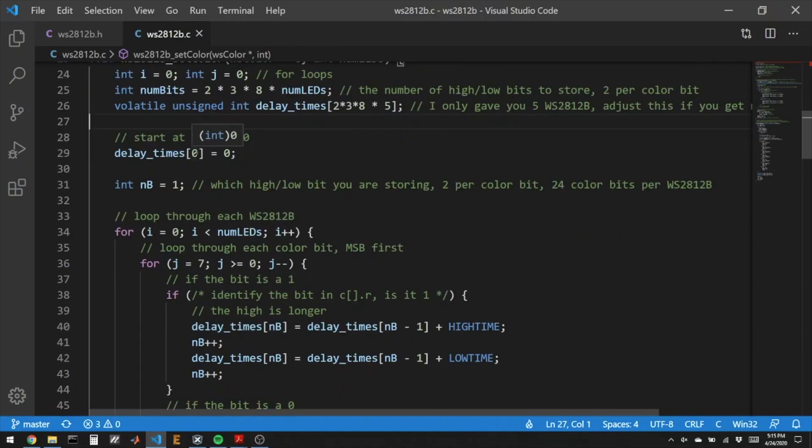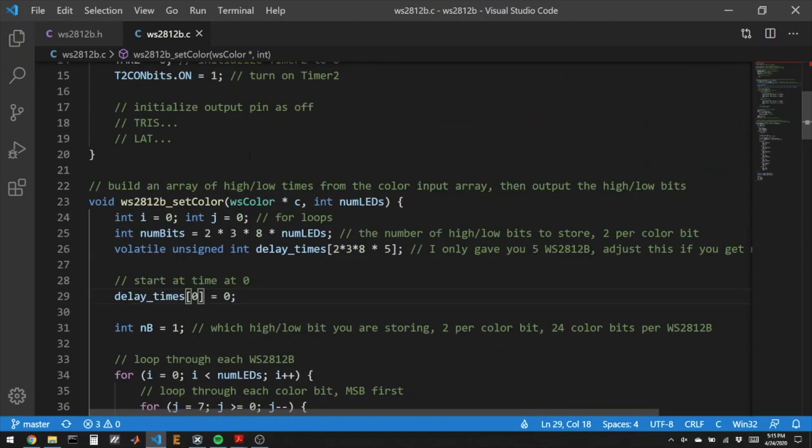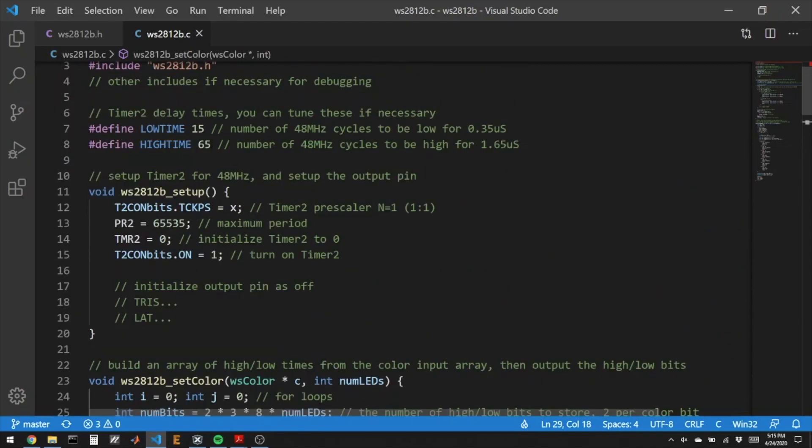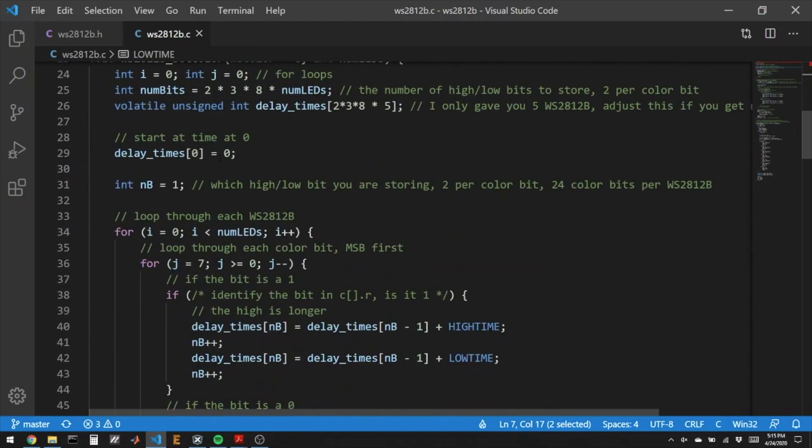We're going to start the initial time at 0, and then if we need to do a logical low bit, logical low bit means wait this amount of time with the pin high and this amount of time with the pin low. If the next bit that we need to output is a logic high, we'll wait this amount of time when the pin is high and this amount of time when the pin is low. So that's the data that's going to be stored inside of the delay times array.